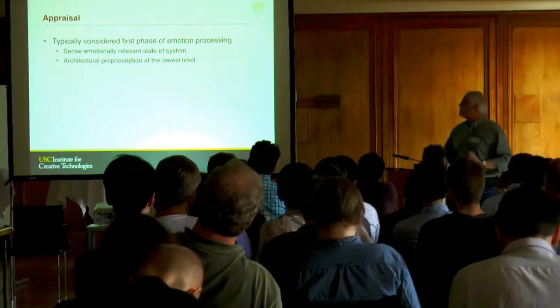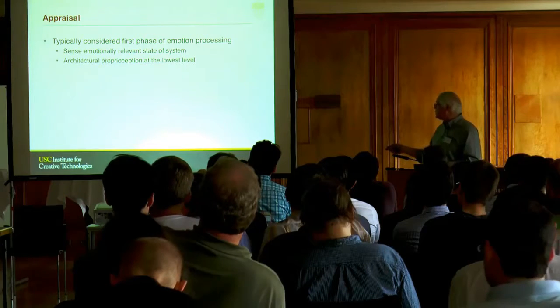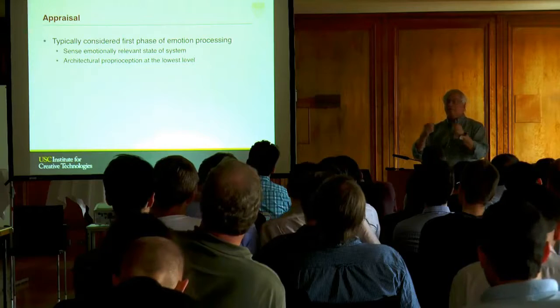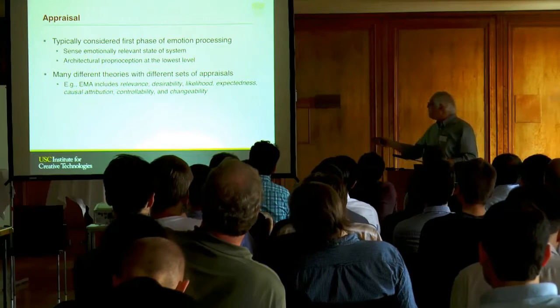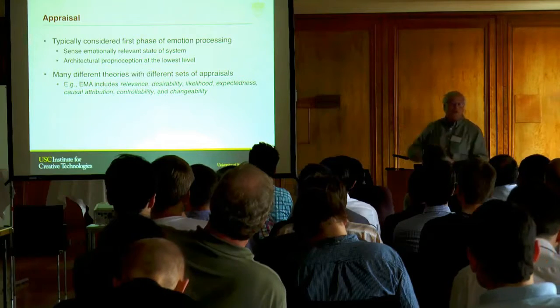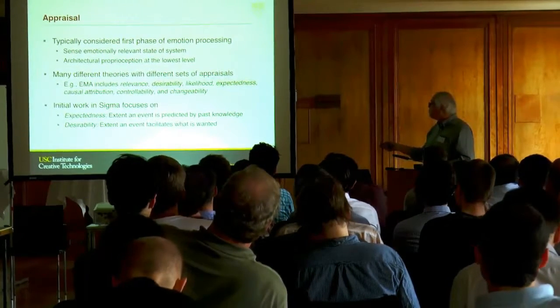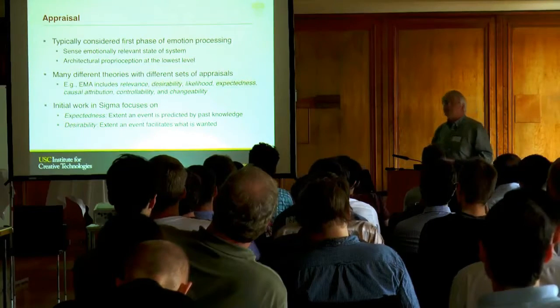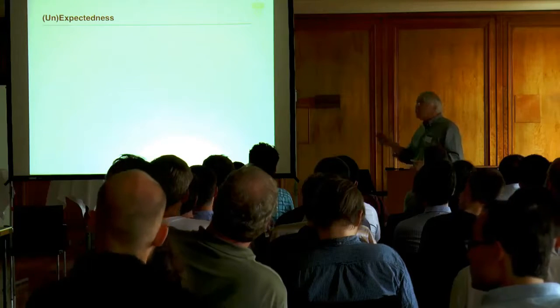Appraisal is typically considered the first phase of emotion processing in most modern theories of emotion. Essentially you're sensing emotionally relevant aspects of the state of the system. At the lowest level you can think of it as architectural proprioception, the architecture sensing itself, sensing properties of itself that are going to matter for how it controls its behavior. The Emma theory has seven different appraisal variables. There's work by Scherer and others that have 20 or more variables. In the initial work in Sigma we're focusing on two of these appraisal variables: expectedness, the extent an event is predicted by past knowledge, and desirability, the extent an event facilitates what you want, what your goals are, what your rewards provide.